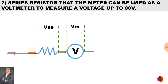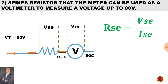In part two we need a series resistor in order to measure up to a total of 80 volts. The total voltage being measured is 80 volts, the resistance of the meter is still 60 ohms, and the current through the meter is still 15 milliamps. The aim of this question is to calculate the value of the series resistor. Therefore R_sc equals V_se over I_se.